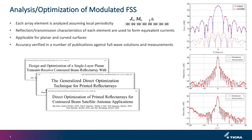For the analysis of the modulated FSS, the same method used for reflect arrays is considered, namely the local periodicity approach. This means that each array element is analyzed assuming that it is located in an infinite array of identical elements. Based on the reflection and transmission response of the elements, equivalent currents over the FSS surface are formed, from which we obtain the final radiation pattern. In Qubes, this method can be used for both planar and curved surfaces, and the accuracy has been verified in a number of publications against full-wave solutions and actual measurements.